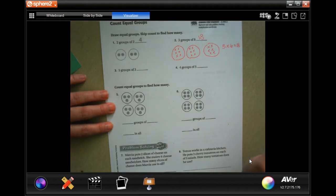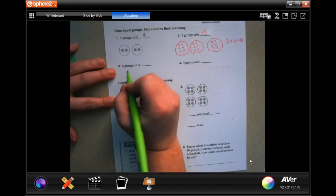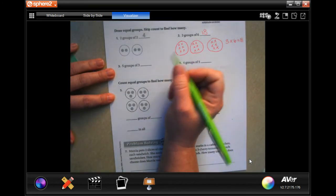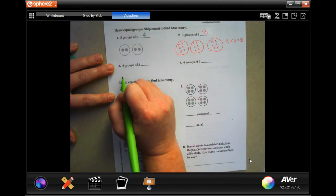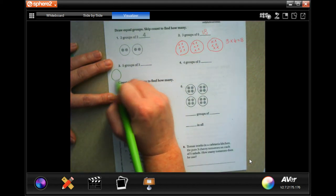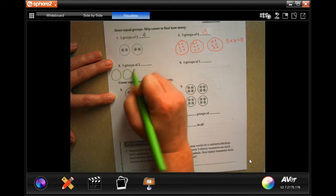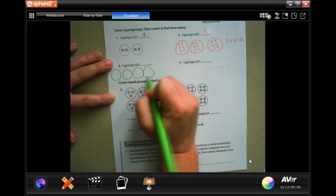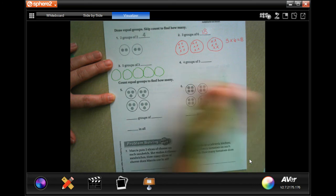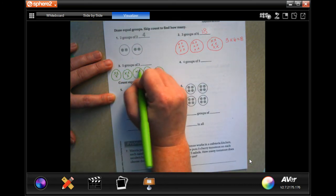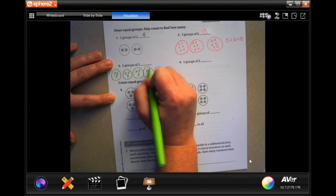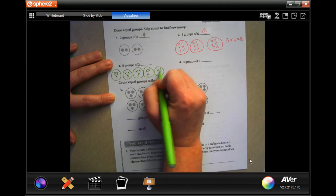Okay, so we are going to go ahead and do number three. So five groups of three. So one, two, three, four, five, and one, two, three in each one.